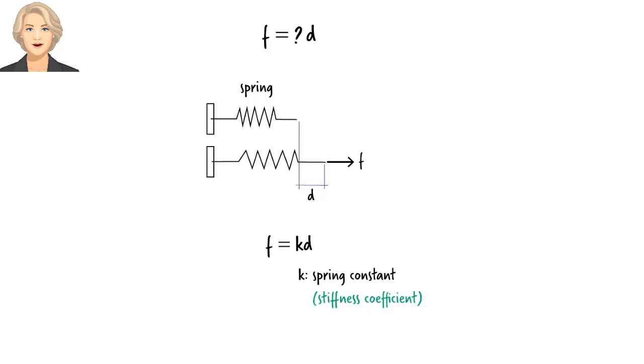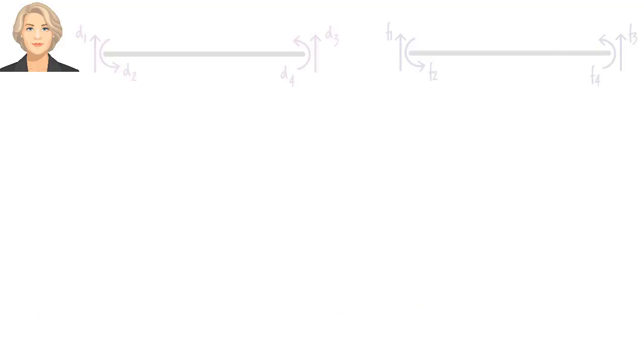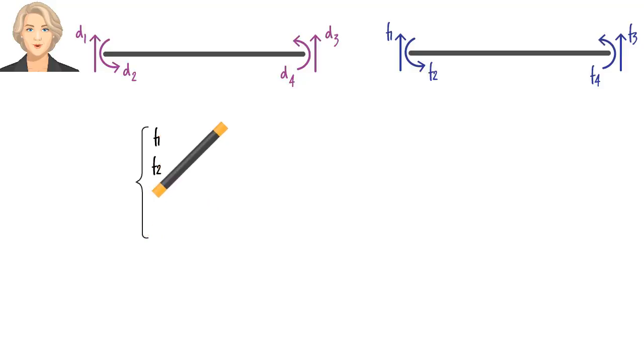Let's generalize this concept by applying it to our beam. Here we have four forces and four displacements. Therefore, we need more than one stiffness coefficient in order to write the needed mathematical relationship. How many coefficients do we need exactly? We need one coefficient for each force-displacement pair. We can pair the four displacements and the four forces in 16 ways.